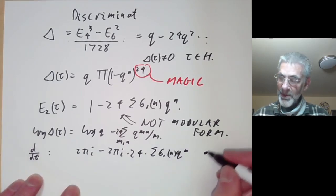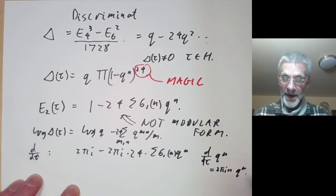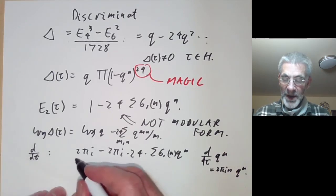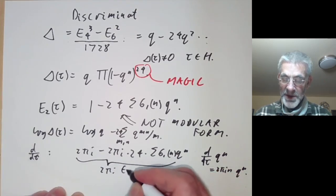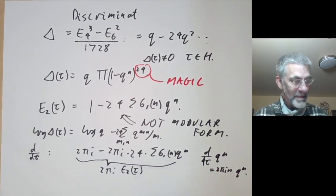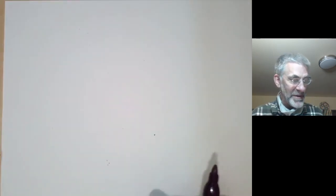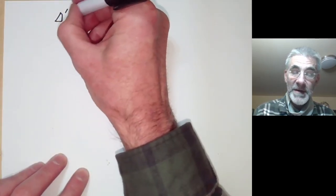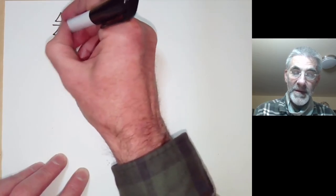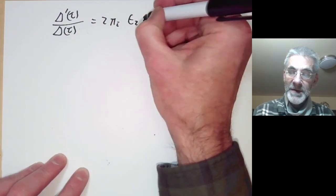Recalling that d/dτ of q to the n is 2πin times q to the n, we see that the logarithmic derivative of Δ(τ) is just 2πi times E2(τ). So we have this fundamental relation: the logarithmic derivative of the discriminant function equals 2πi times E2(τ).